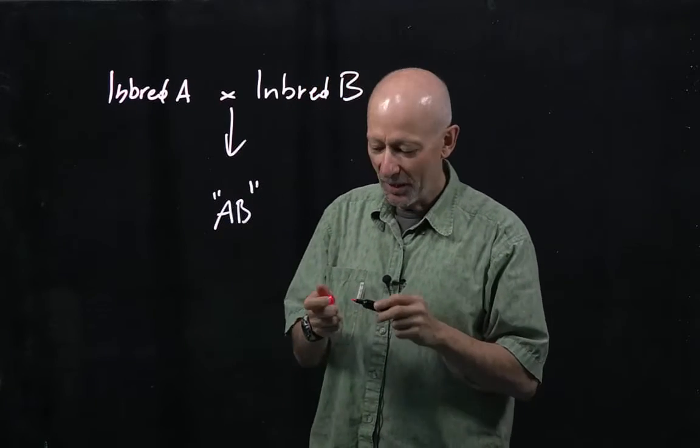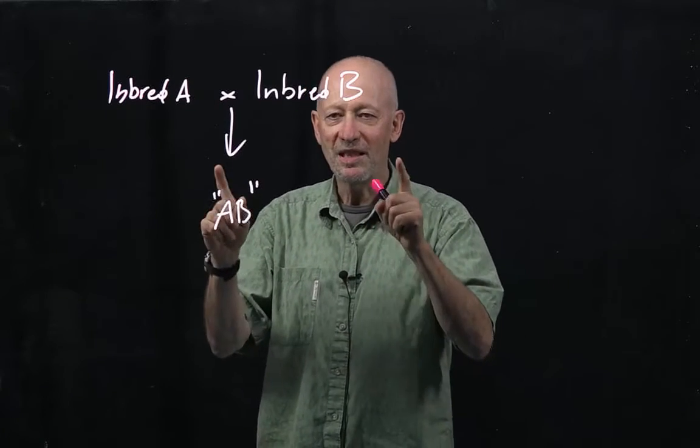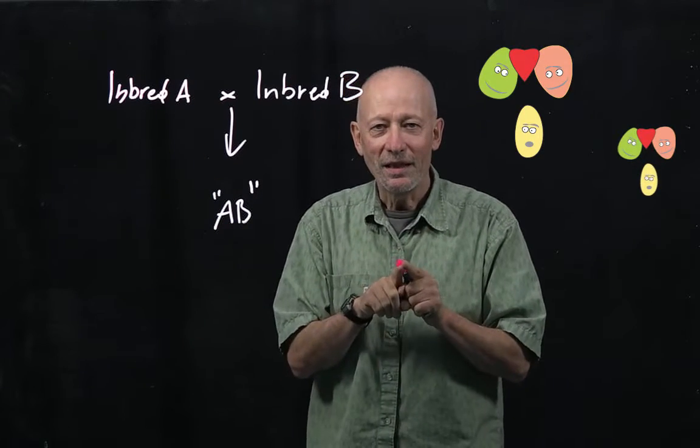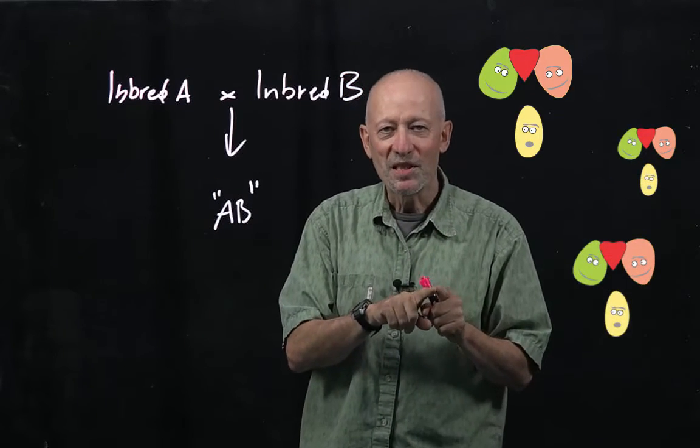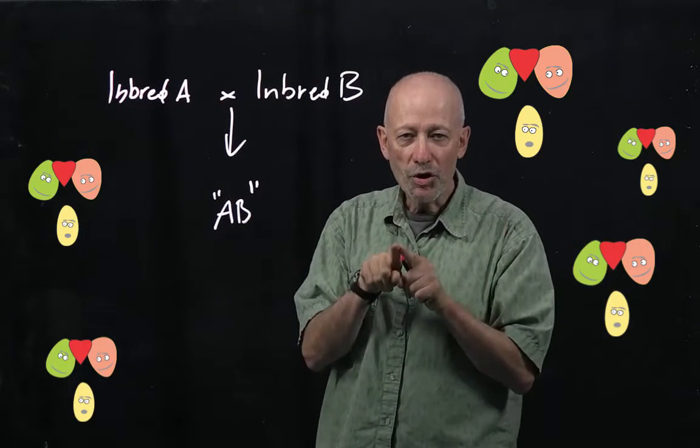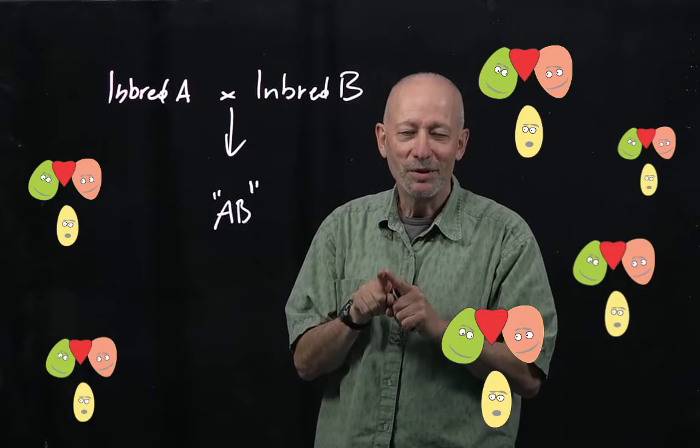The phenotype of this hybrid is 100% predictable. It will be always the same. So not only the inbred produces inbred that are the same, but two inbreds when crossed to each other will produce a hybrid which looks the same.